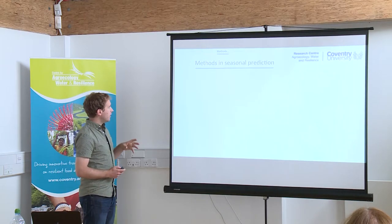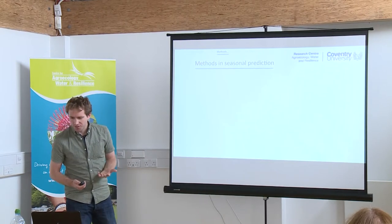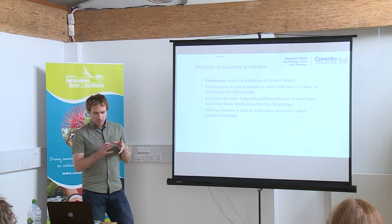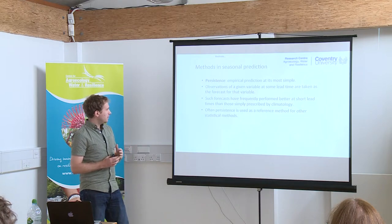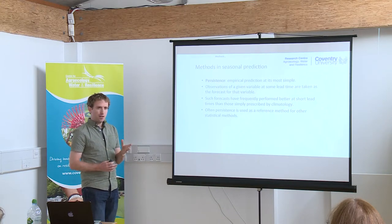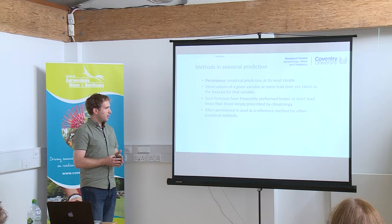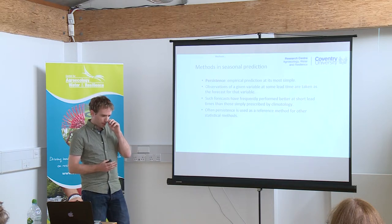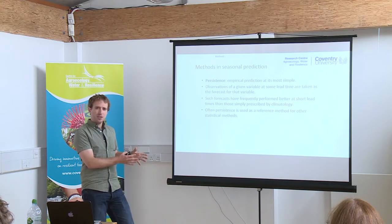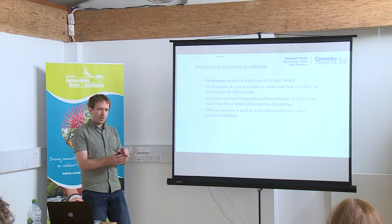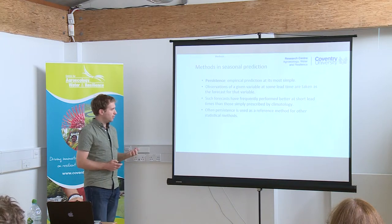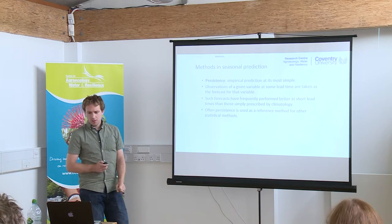I'll move on to talking about methods now. I'm going to start with empirical prediction at its most simplistic, which is using persistence. By persistence, we mean anomalies of a given variable at a particular lead time, which can be taken as a forecast for that variable. So if we're attempting to predict European temperatures during summer, we'd simply look at the spring temperatures and take that anomaly as the forecast. These forecasts frequently perform better than simply taking climatology, so persistence is often used as a reference forecast for other methods.